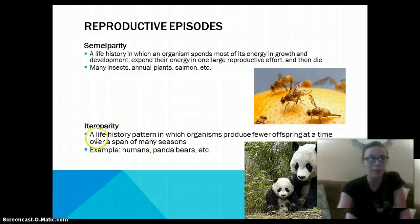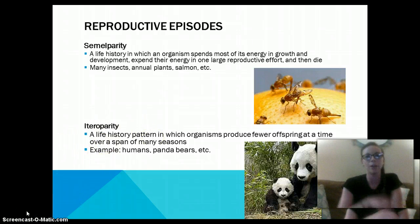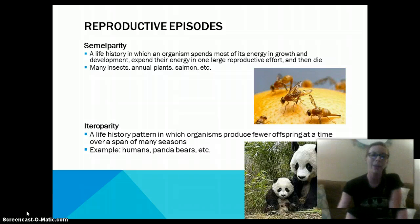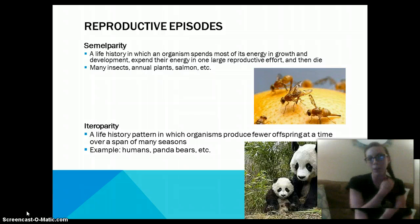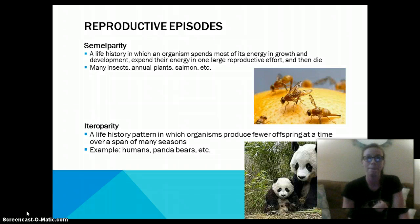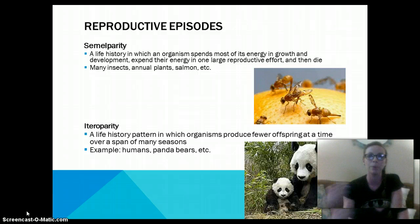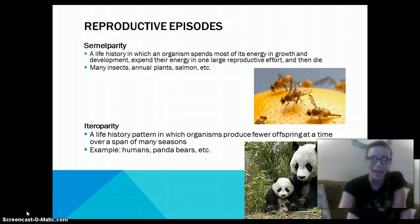Then we have iteroparity, which is a life history pattern in which organisms produce fewer offspring at a time over many seasons. Humans, on average, have about two and a half children per household — typically between two and three. Panda bears have a slow reproductive rate and produce young very slowly, having only one baby at a time.